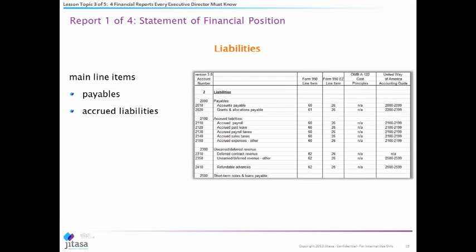Liabilities are what you owe somebody else — an obligation your organization has that you haven't actually paid yet. Accounts payable means you owe somebody money but haven't written a check yet. The most common accrued liability is payroll — for example, everyone works throughout March but doesn't get paid until April 15th. They earned it in March, but you don't cut the check until April, so that falls under liabilities.